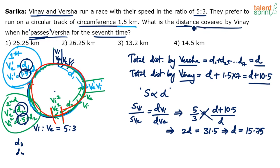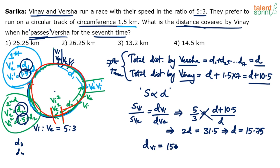The question asks for the distance covered by Vinay when he passes Varsha for the seventh time. Distance covered by Vinay = D + 10.5 = 15.75 + 10.5 = 26.25 kilometers.